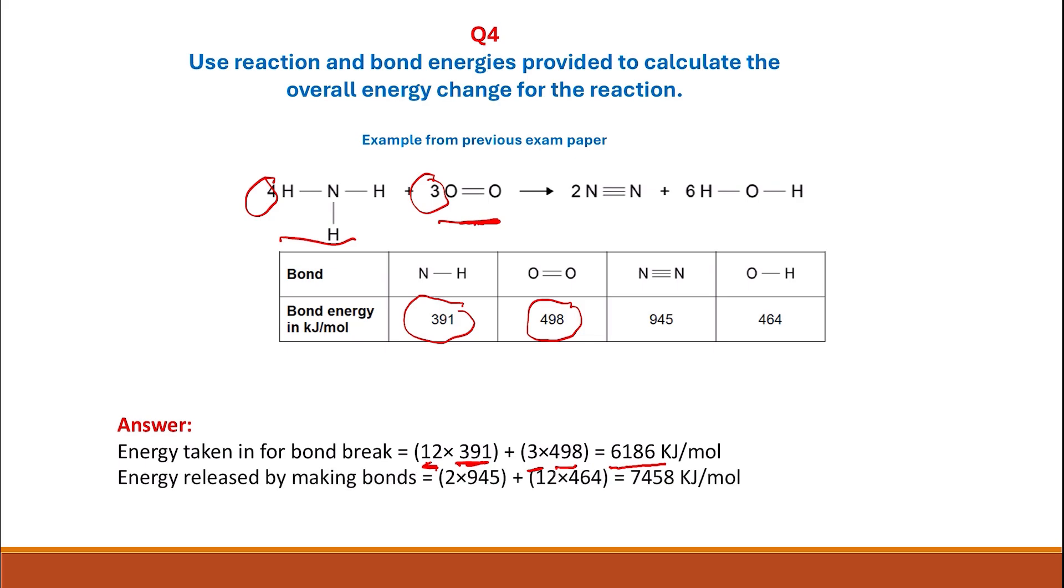Now you need to calculate the energy released by making bonds. For the nitrogen, we have two N≡N, so you multiply 2 times 945 for the nitrogen. Then we have the water molecules. Each water molecule has two O-H bonds, and in total we have six water molecules, so there are 12 O-H bonds. You multiply 12 times 464, and the total for that is 7458 kilojoules per mole for the products.